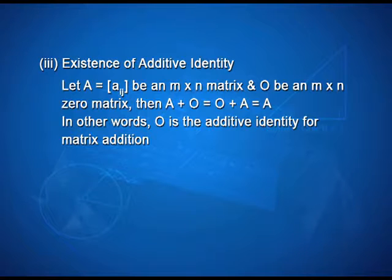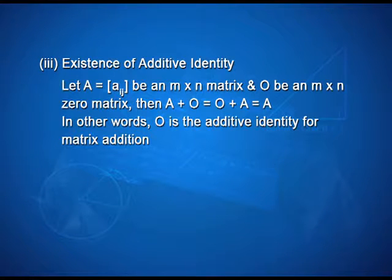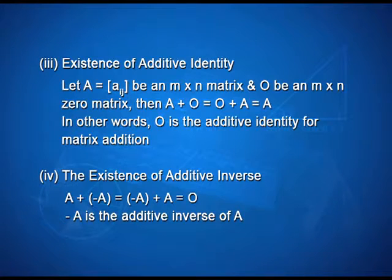Property 3, existence of additive identity: if matrix A is an m by n matrix and O is an m by n zero matrix, then A plus O is equal to O plus A, which equals A. O is the additive identity for matrix addition. Property 4, existence of additive inverse: A plus minus A is equal to minus A plus A, which equals O. Minus A is the additive inverse of A.